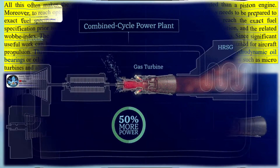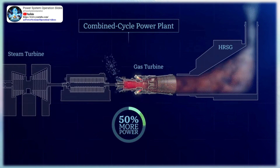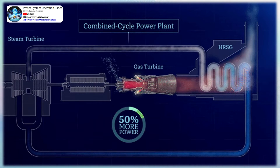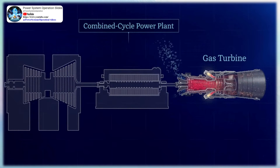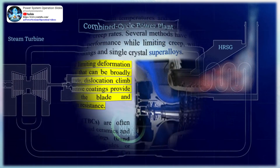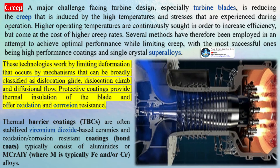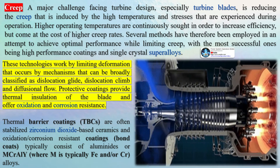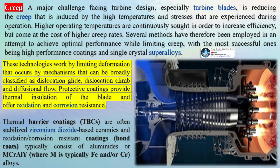A major challenge facing turbine design, especially turbine blades, is reducing creep induced by high temperatures and stresses during operation. Higher operating temperatures are continuously sought to increase efficiency, but come at the cost of higher creep rates. Several methods have been employed, with the most successful being high-performance coatings and single crystal superalloys. Using thermal barrier coatings (TBCs) limits temperature exposure of the superalloy substrate, reducing dislocation and vacancy creep. A coating of 1 to 200 micrometers can decrease blade temperatures by up to 200 degrees Celsius (392 degrees Fahrenheit). Bond coats applied via pack carburization provide improved TBC adherence and oxidation resistance.